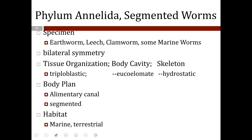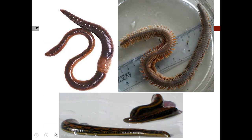Here is Phylum Annelida — the segmented worms. This includes marine worms, leeches, earthworms, and clamworms. They exhibit bilateral symmetry and are triploblastic coelomates with a hydrostatic skeleton. They have an alimentary canal — a complete digestive tract. The key feature is that they are segmented. They live in marine as well as terrestrial environments. Examples shown include the leech, nereis, and earthworm.